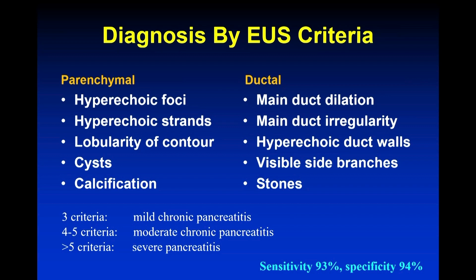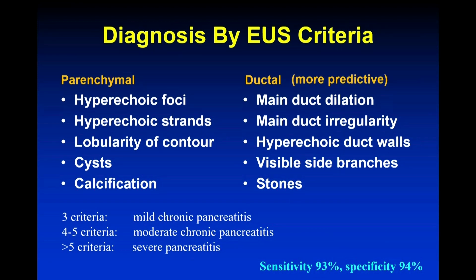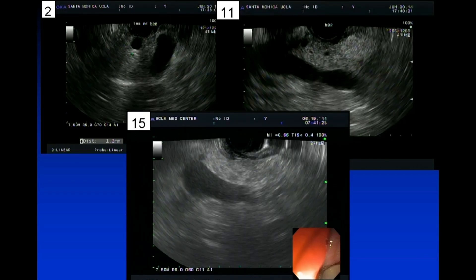The role of endoscopy in diagnosis with EUS is often very useful, particularly in subtle chronic pancreatitis. There are standardized criteria that we use when we look at the pancreas to decide if chronic pancreatitis is present, but they're not all 100%. The ductal findings are perhaps a little bit more useful. Sometimes we find parenchymal changes in someone who's completely asymptomatic — they may be smokers — so you have to be a little careful, but the more criteria that are present, the more confident you are.